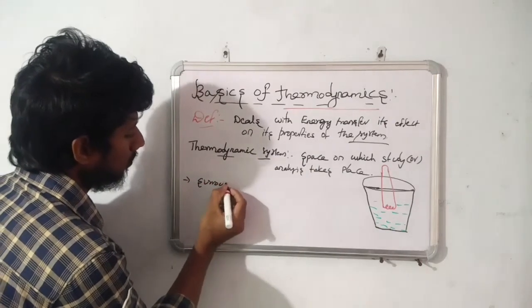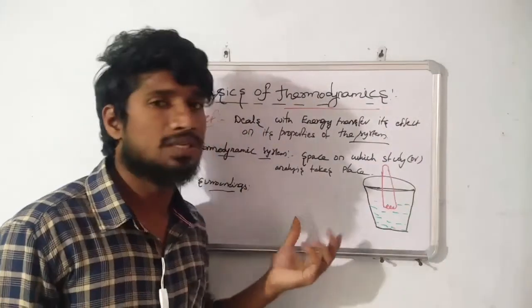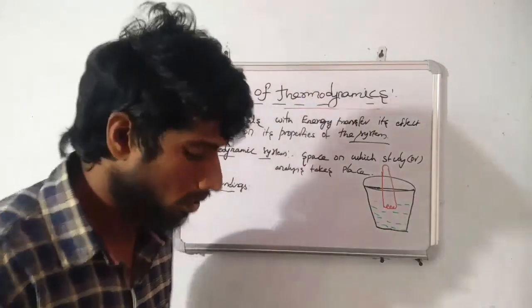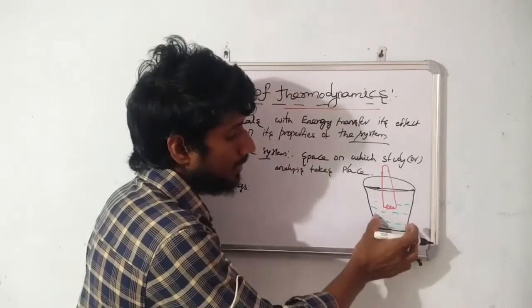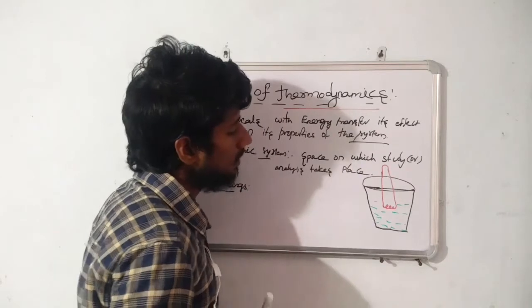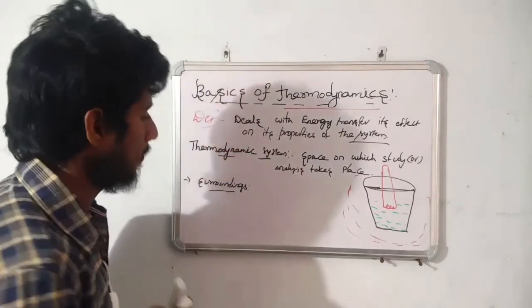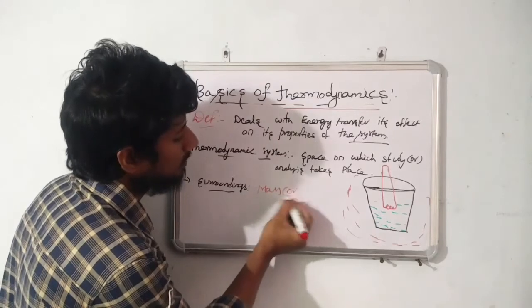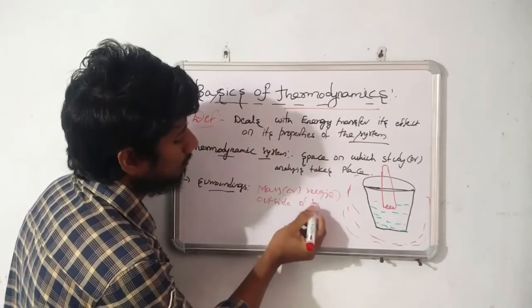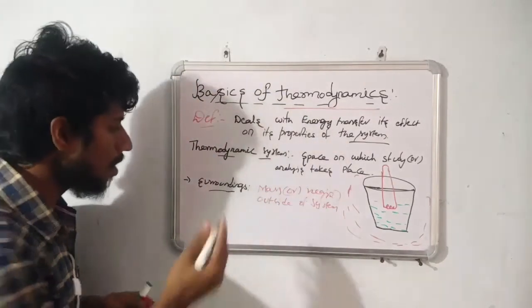Next: surroundings. The surroundings is simply defined as the mass or region outside of the system. That is the definition of surroundings.